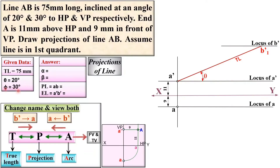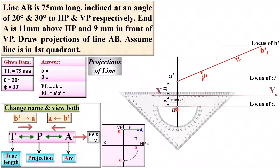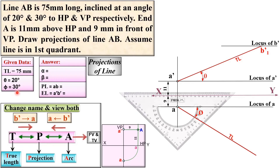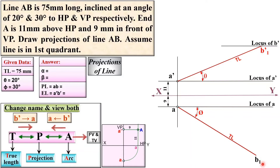Similarly, follow the true inclination phi, which is represented in the plan (top view). AB2 makes 30 degrees. The angle is given as 30 degrees, so mark it. The true length is 75 mm, so locate B2 at exactly 75 mm from point A. Keep in mind that the true length is always used with a subscript. This gives you the locus of B.